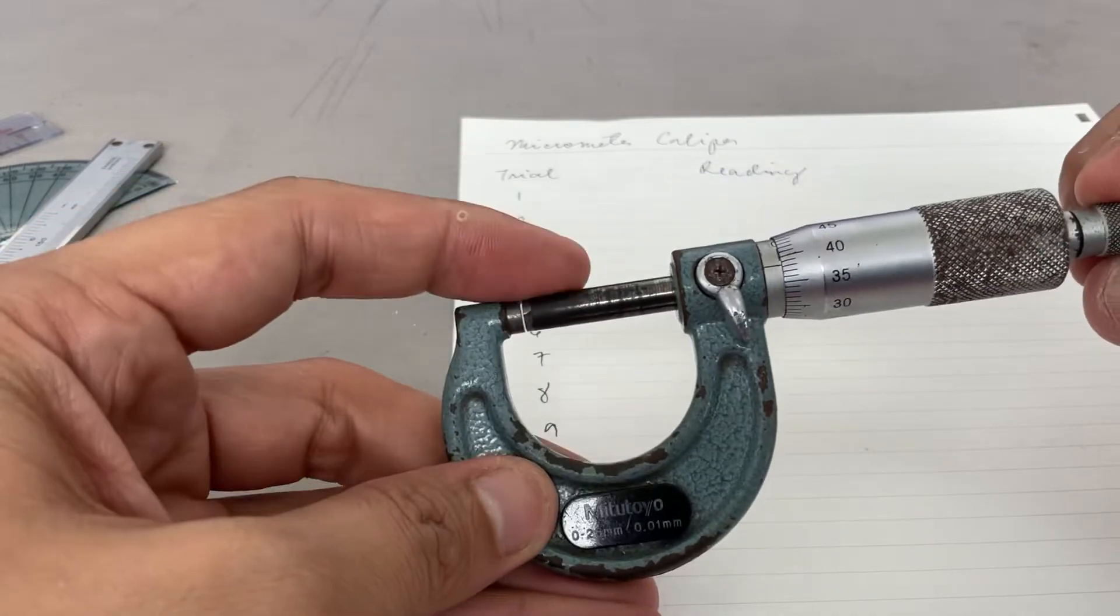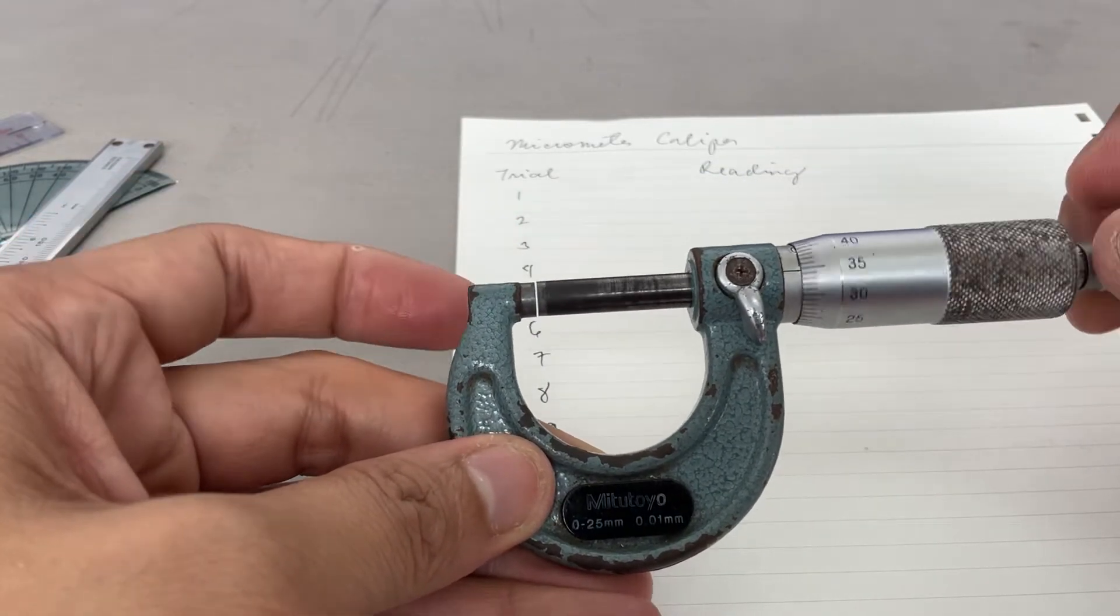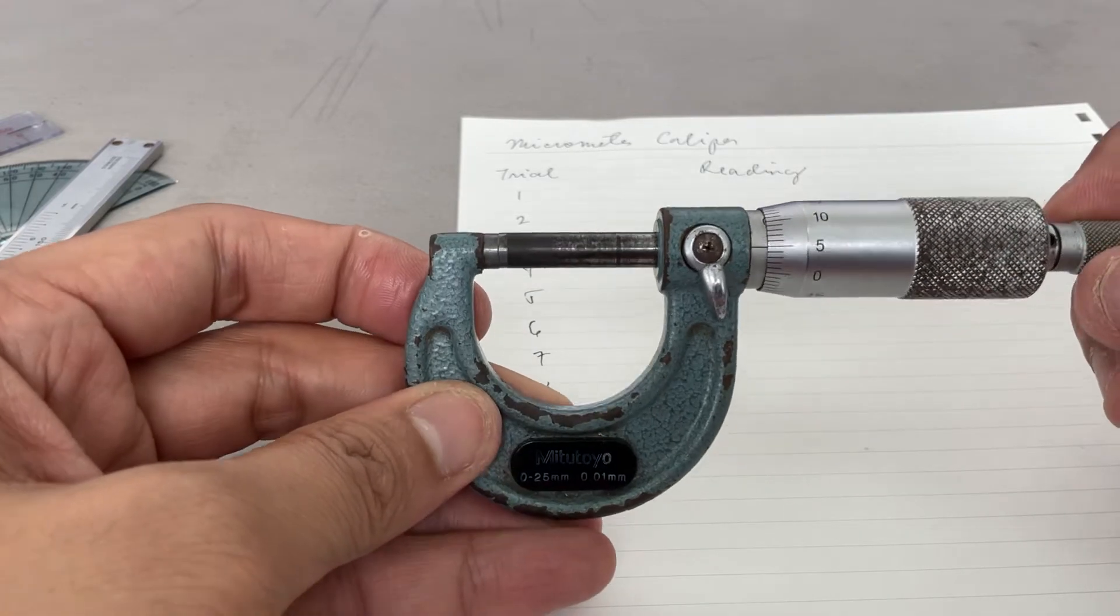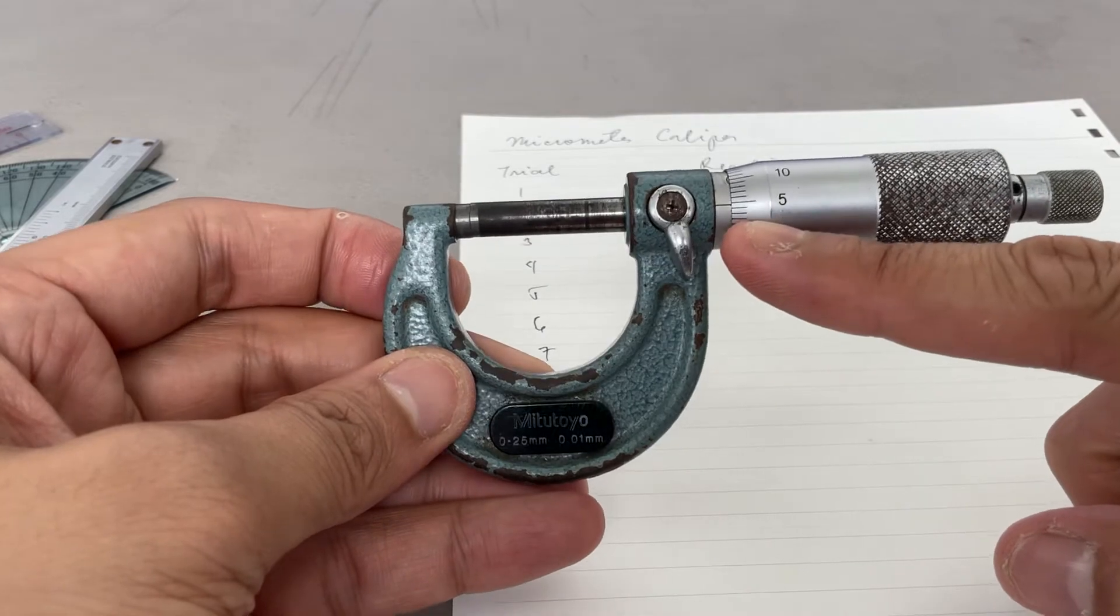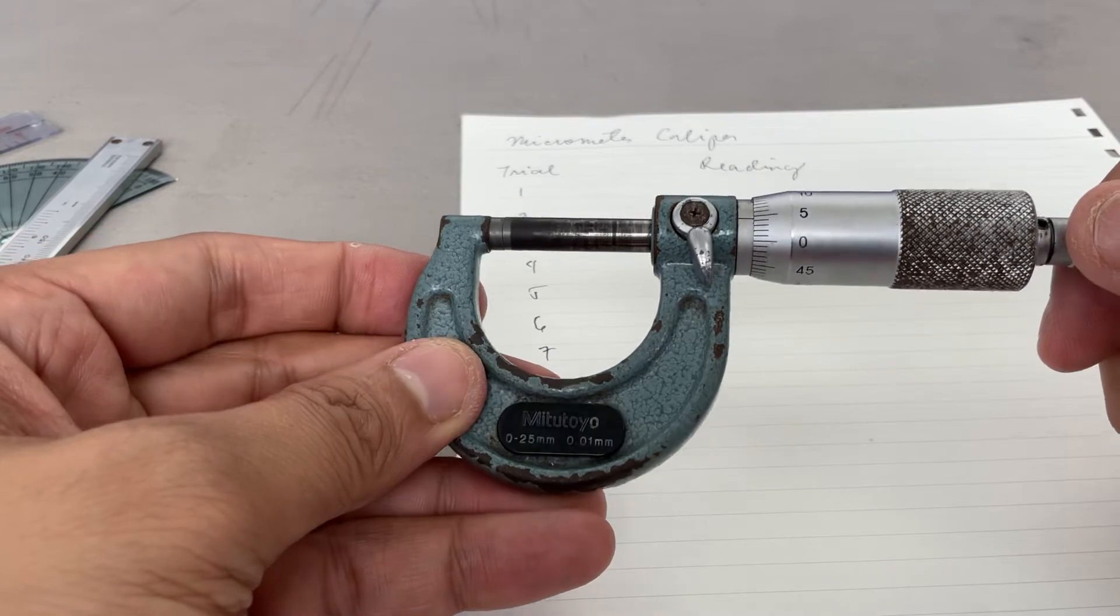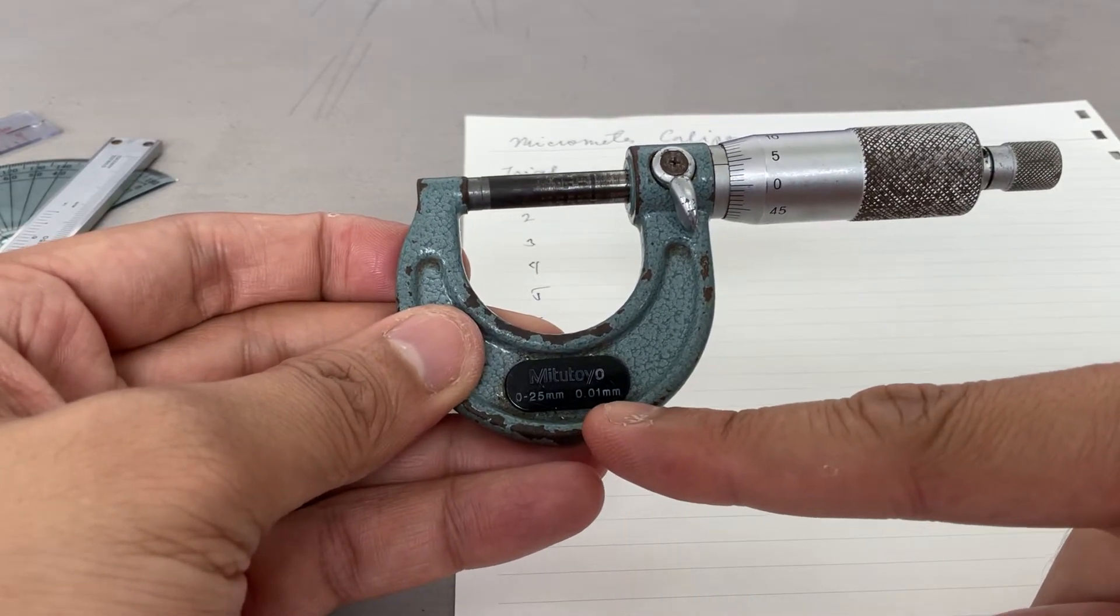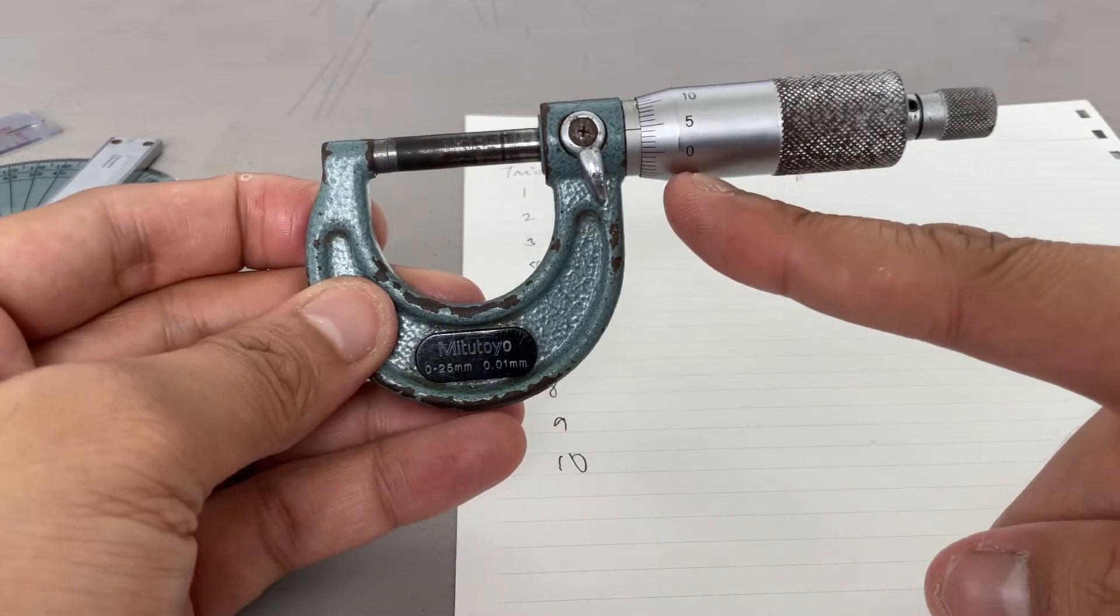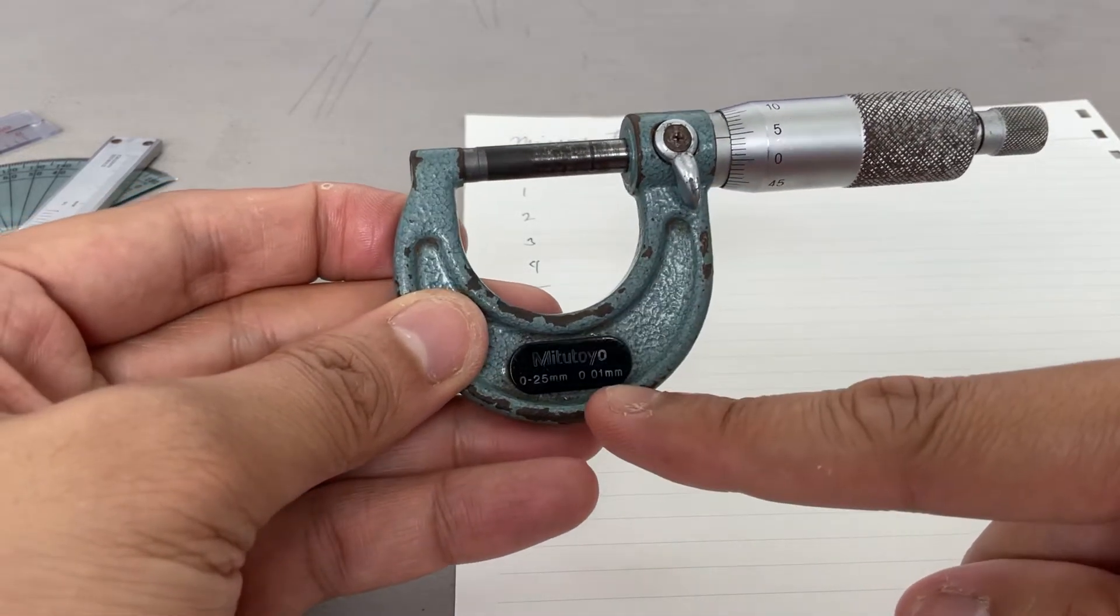You can verify - it should be zero, but here we have a reading already. One click in between four and five. The least count of this is 0.01, which means that every division of this micrometer scale represents 0.01.